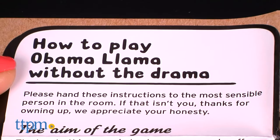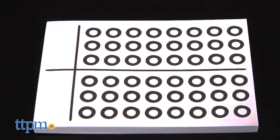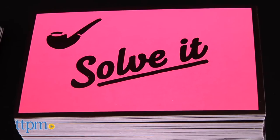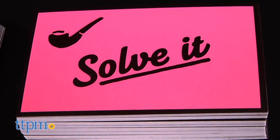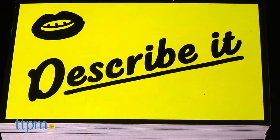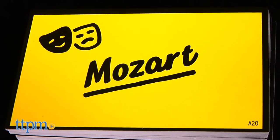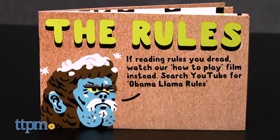This party game comes with one die, one scorekeeping pad, one pencil, pink solve it cards, green describe it cards, yellow act it cards, and one instruction booklet.